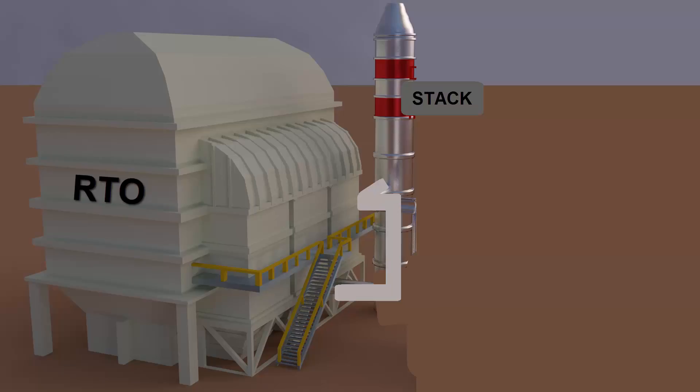Such plants employ a regenerative thermal oxidizer to treat the off-gas of DGG dryers before discharging them to atmosphere through a tall stack.